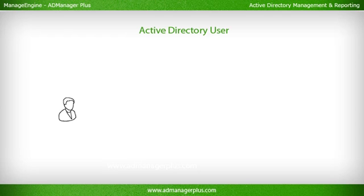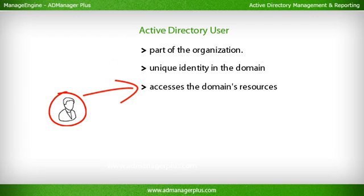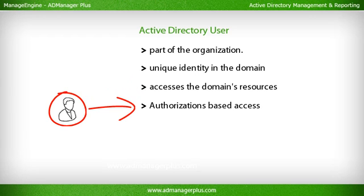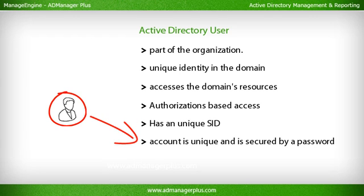An Active Directory user is an individual or person who is part of the organization. They get a unique identity in the domain through their user account and access domain resources through that account. Each user is allowed inside a domain only after authentication and is allowed to access resources like shared folders, printers, computers, and applications based on their authorizations. Each user account has a unique SID which allows or denies access to network objects and resources, and each user's account is secured by a password.